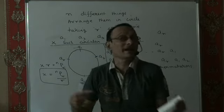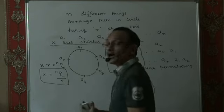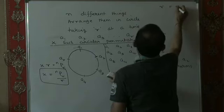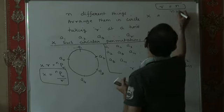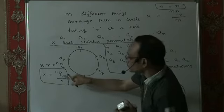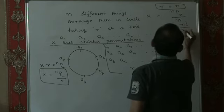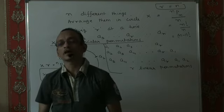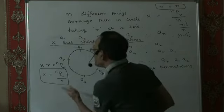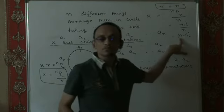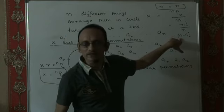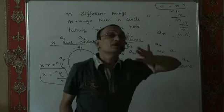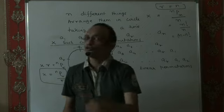So the number of permutations of n different things taken R at a time along a circle would be nPr by R. Not all at a time — if it was all at a time it would have been (n minus 1) factorial. But taking them R at a time, it becomes nPr by R. In our previous session, we did a special case where R equals n. When R equals n, x becomes nPn divided by n, which is n factorial divided by n, making it (n minus 1) factorial. Half of them are circular anti-clockwise, half are clockwise. But if clockwise and anti-clockwise are different in a given physical situation, the count is nPr by R. If they are indistinguishable, the count would be half of this.